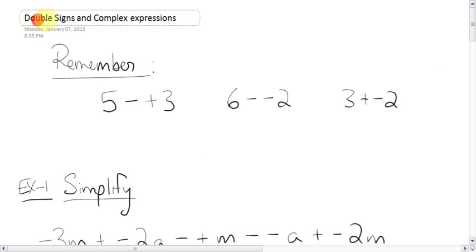The next topic is called double signs and complex expressions. What this means is it's looking at something we've looked at before, double signs, and some nasty, ugly expression questions, complex ones.